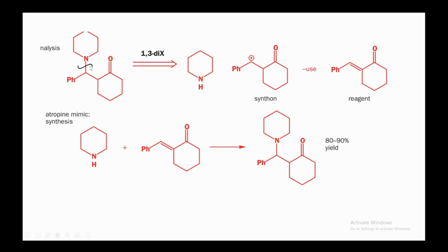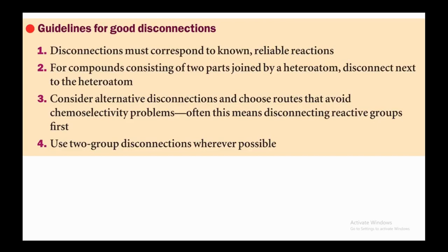Another 1,3-relationship: a tertiary amine and a ketone separated by 1,2,3. Disconnect the C–N bond to get a secondary amine and a positive charge equivalent to a Michael acceptor (enone). React piperidine with the Michael acceptor — the NH attacks the double bond — giving the C3–N bond in excellent yield. Note: you are not supposed to write yields in exam reactions; the yield shown here is from the literature.